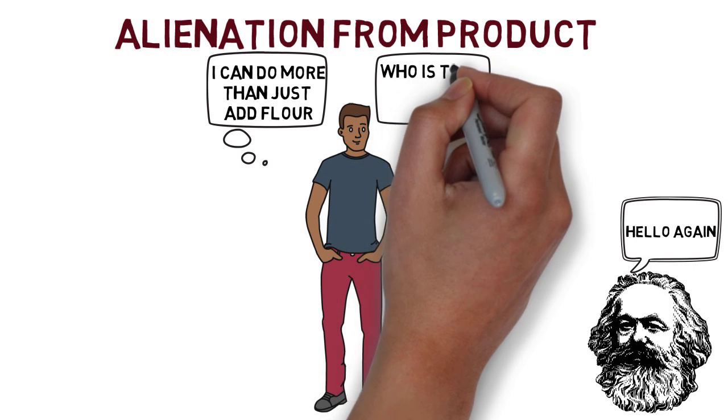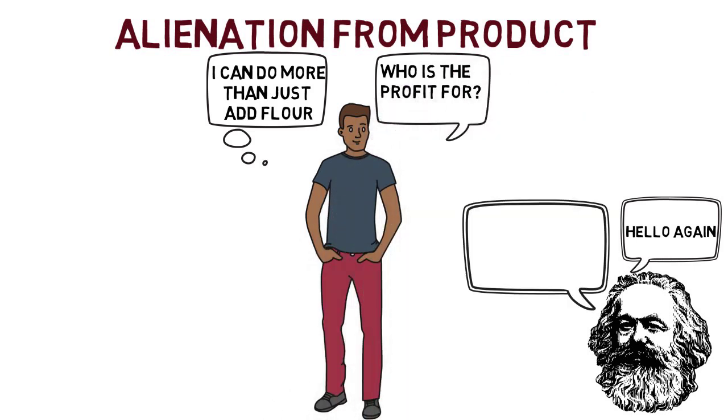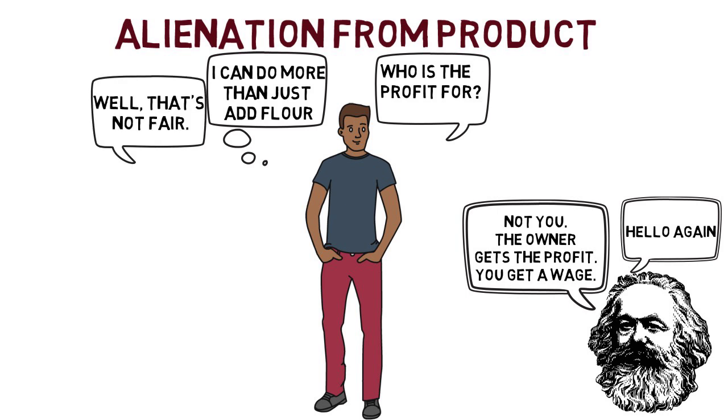But who is the profit for? The profit is for the capitalist owner. The capitalist owner is in control of what is produced and how it is made. Therefore, there is little connection and sometimes little concern for the product.